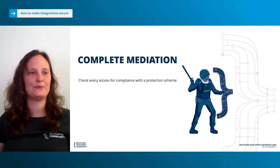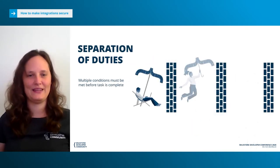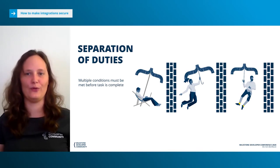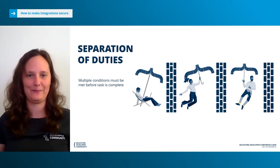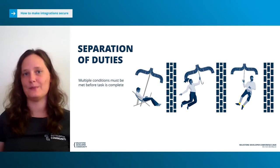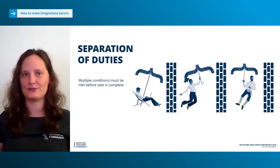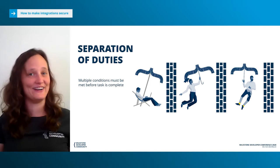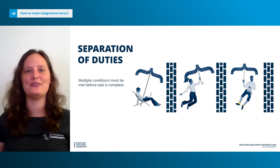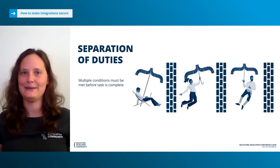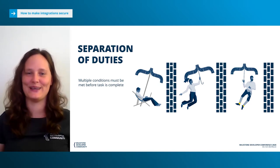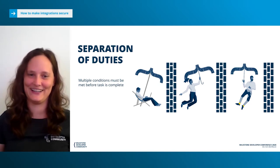The next principle is called Separation of Duties, meaning one person should not be solely responsible for a complete task. For example, if I as a worker at Milestone request a company car — say a Ferrari — I should not be the one who also approves the purchase, because I am pretty sure Milestone does not want to provide a Ferrari as a company car.